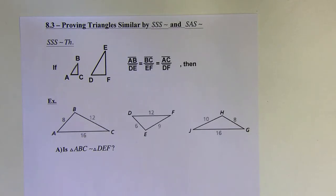Okay, 8.3, proving triangles similar by SSS similarity and SAS similarity. In 8.2, we had AA similarity theorem, and now we've got these two new ones.